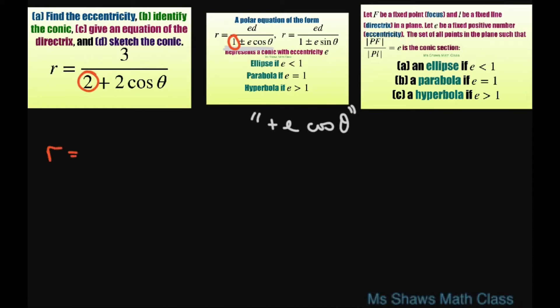We're going to write this as r equals 3 divided by 2 plus 2 cosine theta. If we multiply our numerator and denominator by 1 half, that gives us 3 halves divided by 1 plus cosine theta. That means there's a 1 here, so e equals 1.